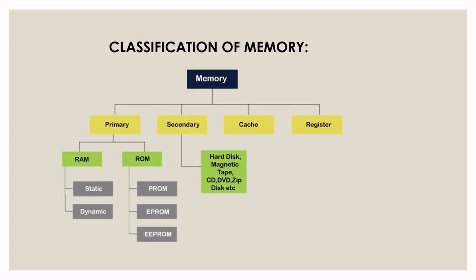In the next slide we have classification of memory. Memory is classified into 4 types: primary, secondary, cache, and register. Primary is further divided into 2 parts: RAM and ROM. In RAM we have static and dynamic. In ROM we have ROM, EROM, and EPROM. In secondary we have hard disk, magnetic tape, CD, DVD, zip disk, etc.